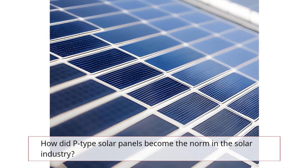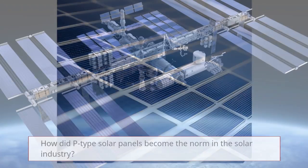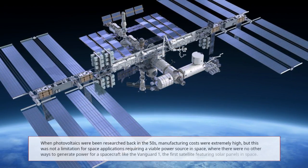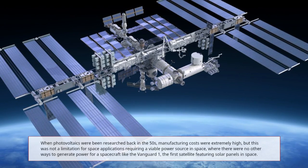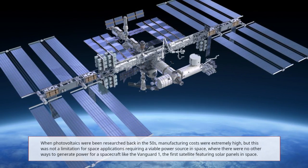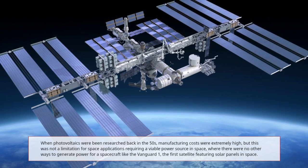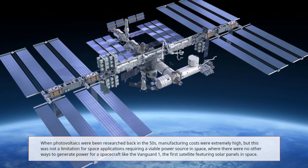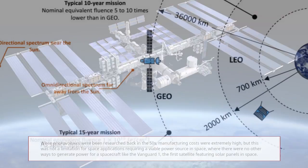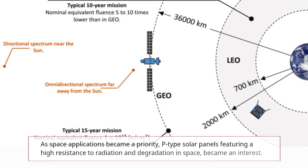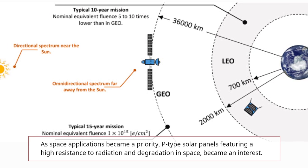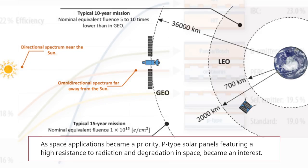How did P-type solar panels become the norm in the solar industry? When photovoltaics were being researched back in the 1950s, manufacturing costs were extremely high, but this was not a limitation for space applications requiring a viable power source in space, where there were no other ways to generate power for a spacecraft like the Vanguard 1, the first satellite featuring solar panels in space. As space applications became a priority, P-type solar panels featuring a high resistance to radiation and degradation in space became an interest.